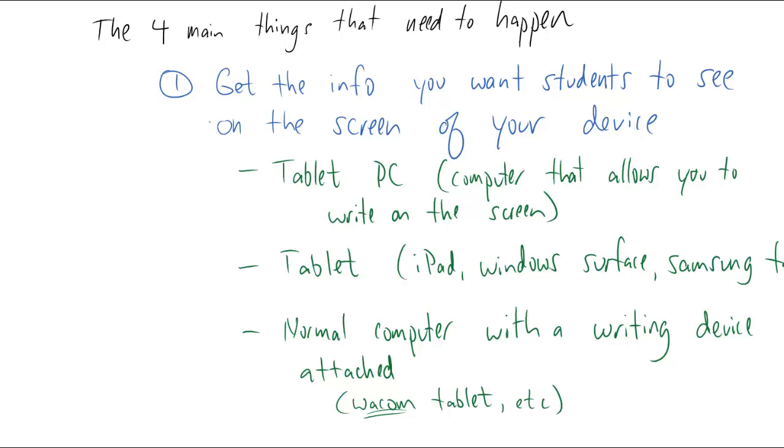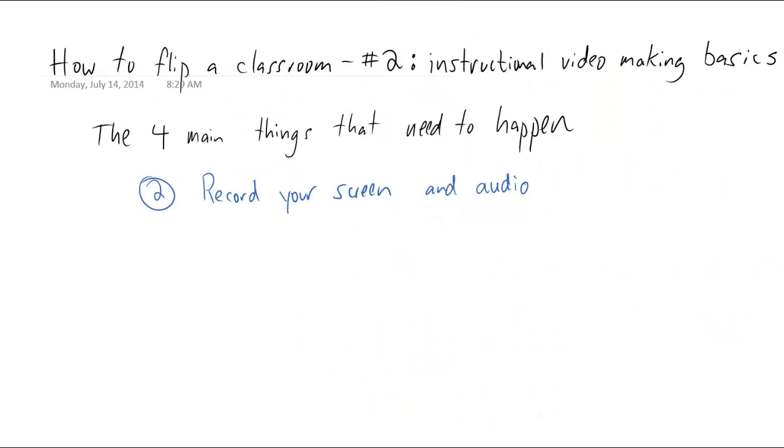Alright, let's move on to the second of the four main things that need to happen before you can make one of these videos. You need to record your screen and some audio to make this video. This is called screencasting. There are many options for this.